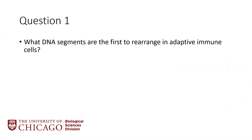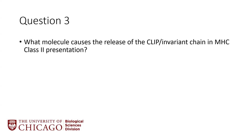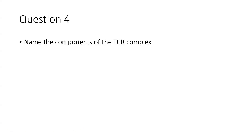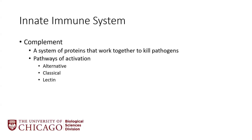I've put in some practice questions — some pre-post questions. These should start to look pretty familiar, but I'll run through them quickly and go over them at the end. Question one: what DNA segments are the first to rearrange in adaptive immune cells? Question two: which antibody is the best at fixing complement? Question three: what molecule causes the release of the clip or invariant chain in MHC class 2 presentation? Question four: name the components of the T-cell receptor complex. Question five: name the components of a T-cell co-stimulator. Question six: name two down-regulating cytokines. These are broad questions reflecting the type of detail that board questions are written on.